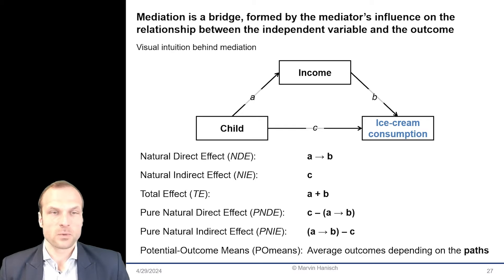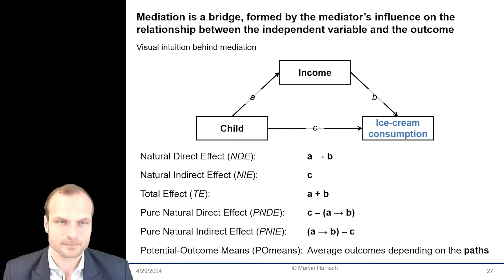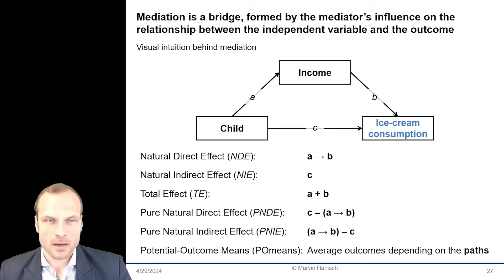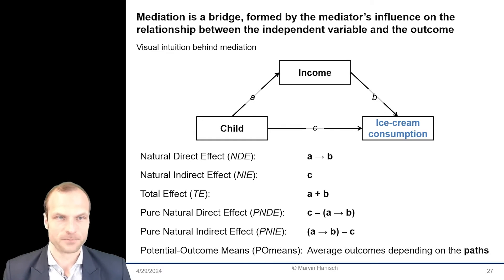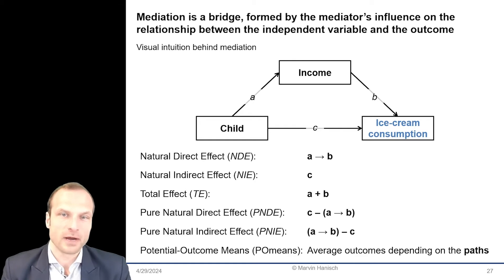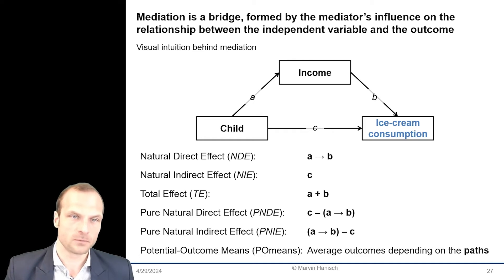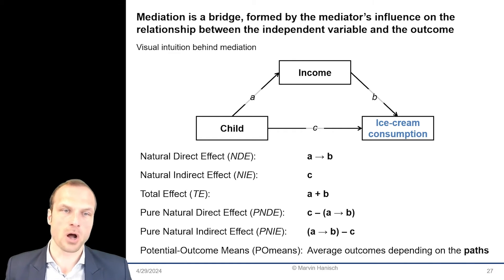And if we want to test this direct and indirect effect, we can use a mediation model. For mediation models, we need to understand a few terminologies. The first one is the natural direct effect — the effect that goes directly from the independent variable to the outcome without passing through the mediator. Think of it as the main road from cause to effect.